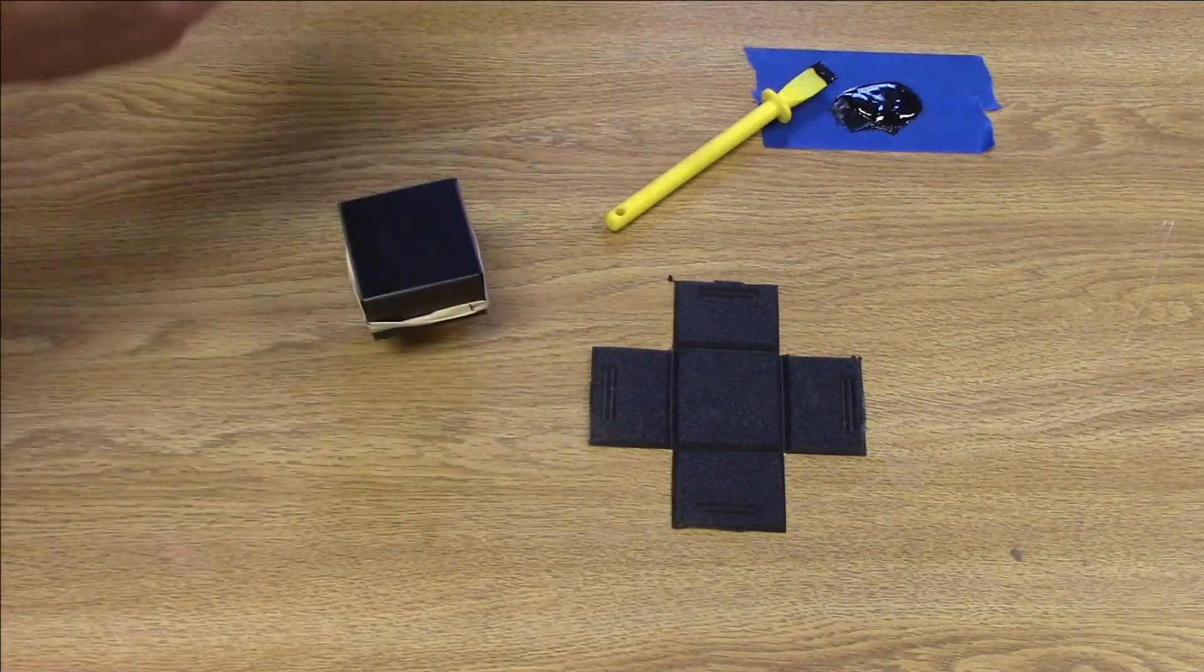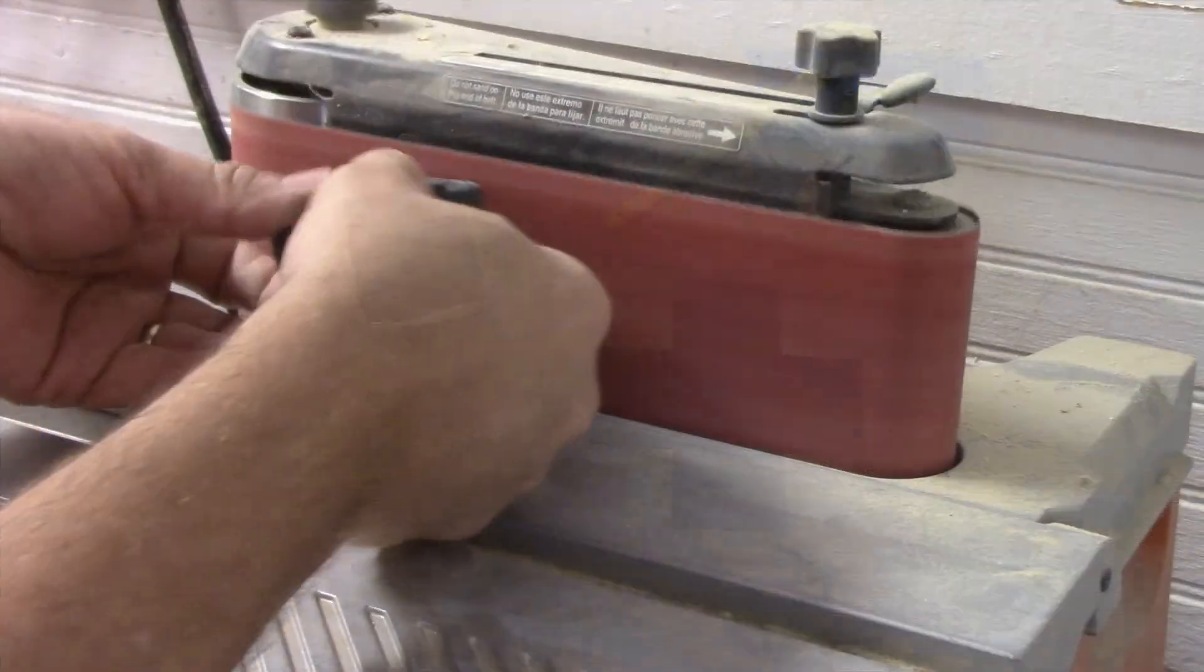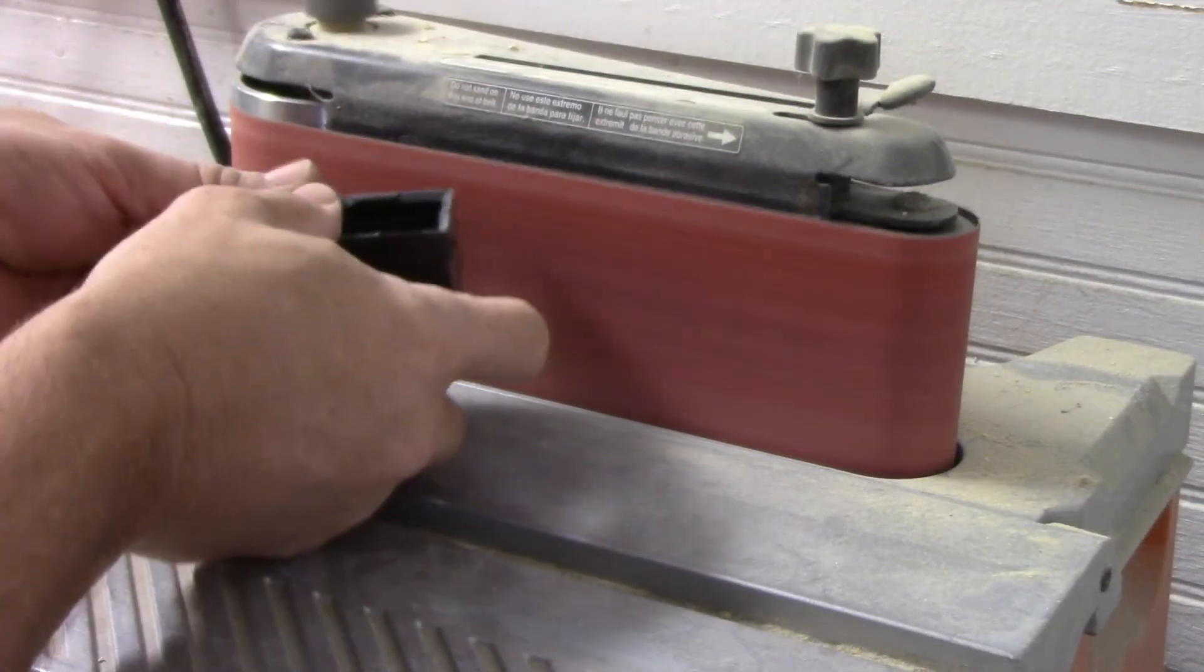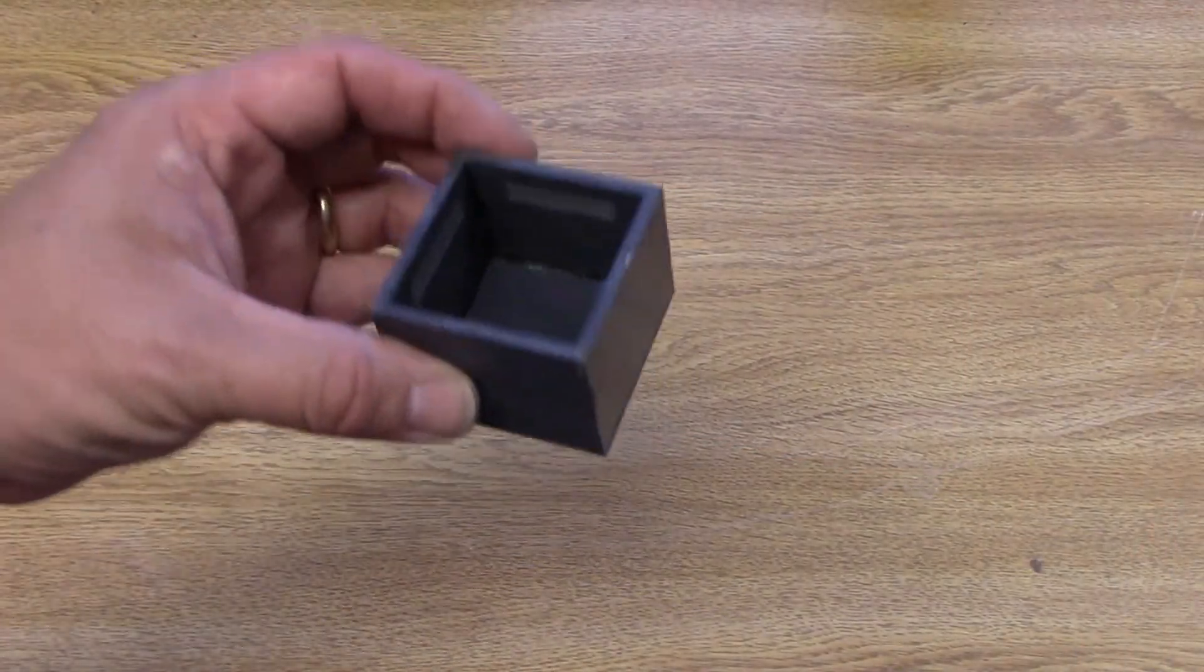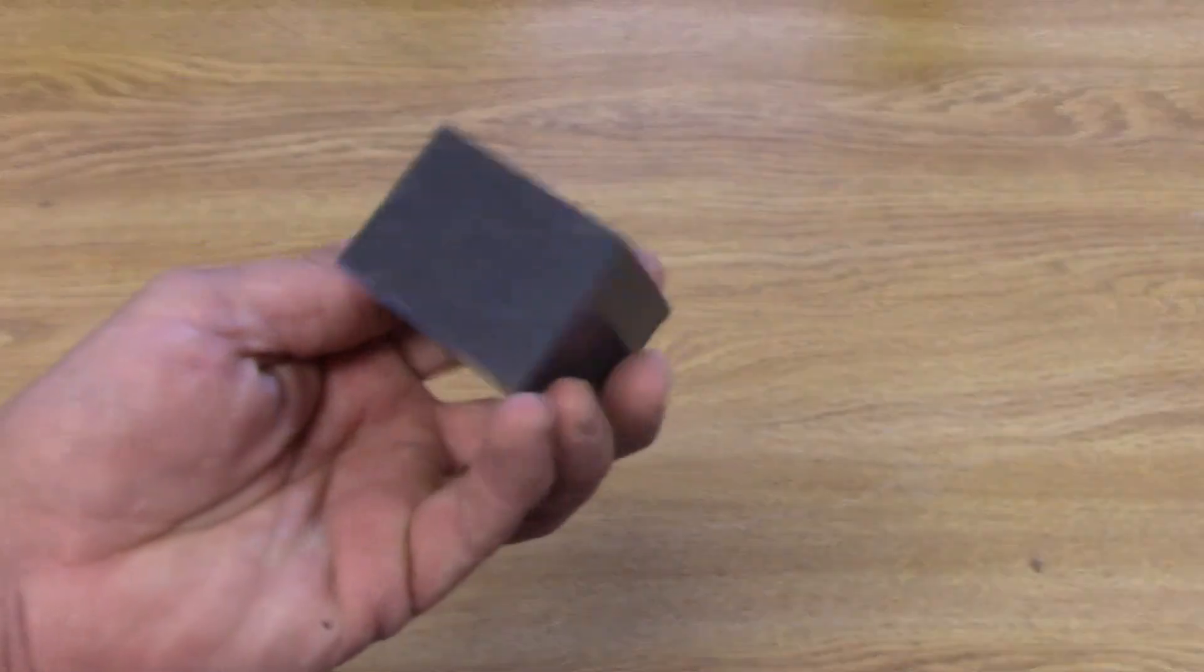Once the epoxy cured, I removed the rubber band and any excess epoxy or rough edges on a belt sander. The bins are now complete and strong and ready to be used.